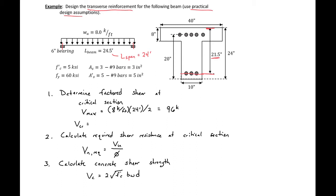To find our critical shear we now need to go from the edge of our bearing out a distance d. The shear at the centroid of our bearing is equal to 96 kips minus 8 kips per foot — which is the slope of our shear diagram and equals our distributed load — times 3 inches (half of our bearing) to get to the edge of the bearing, plus our d of 21.5 inches, divided by 12 inches per foot. So our V_u at the critical section equals 79.7 kips.